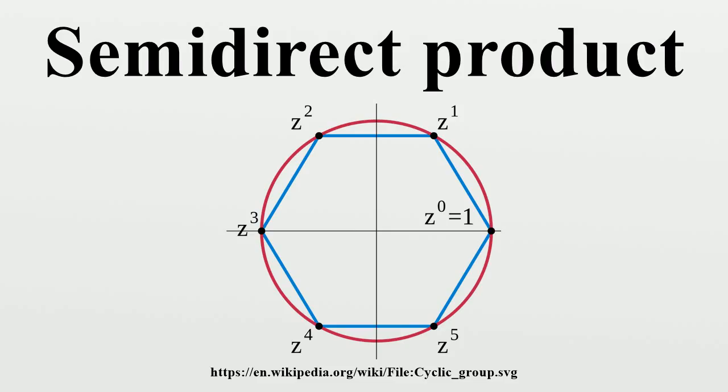Properties: As a consequence of Lagrange's theorem, if G is the semi-direct product of the normal subgroup N and the subgroup H, and both N and H are finite, then the order of G equals the product of the orders of N and H.